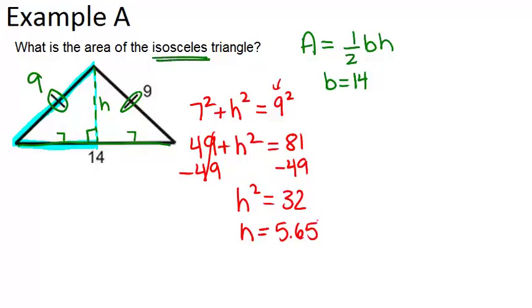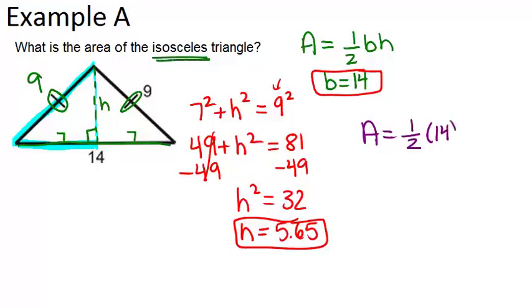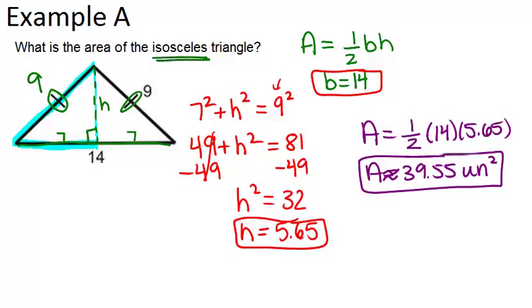Now, you could leave the answer as the square root of 32 and keep it in radical form. That's fine as well. I'm just going to use decimals in this case. So our height is 5.65, our base is 14, so we're going to plug this into our area formula. Area equals 1 half times 14 times 5.65. And when we calculate that out, we get approximately 39.55. So I'm going to make the symbol be approximately as opposed to equals, and then we would want units squared.